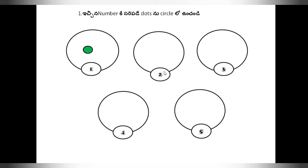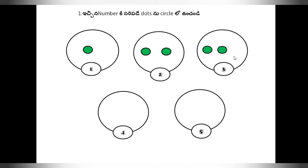Next here is 2, so we have to write 2 dots. Here is 3, so how many circles we have to draw here? 3 dots. 1, 2, again 3.